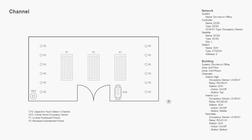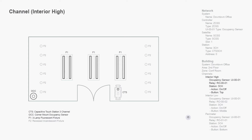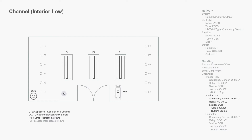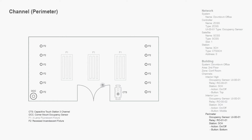Using our floor plan and our list of configurations, let's look at the channels we'll create. Our first channel is interior high. For inputs, we have the occupancy sensor and the top button on our station providing on-off control for our exterior lamps and fluorescent fixtures. Our next channel is interior low: the occupancy sensor and middle button on our station control the interior lamps of our fluorescent fixtures. Our final channel is perimeter: the occupancy sensor and bottom button on our station provide on-off control for our incandescent fixtures.